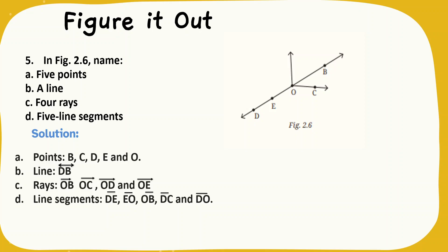Let us see question number five. In figure 2.6, name five points. We need to name five points and a line, four rays, five line segments. So what are the points here? B is a point, and D is a point, B is a point, C is a point, D is a point, E is a point and O is a point. So these are the five points.